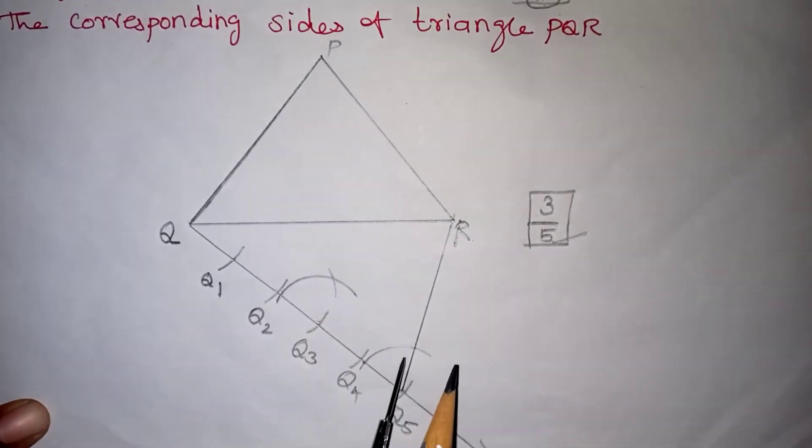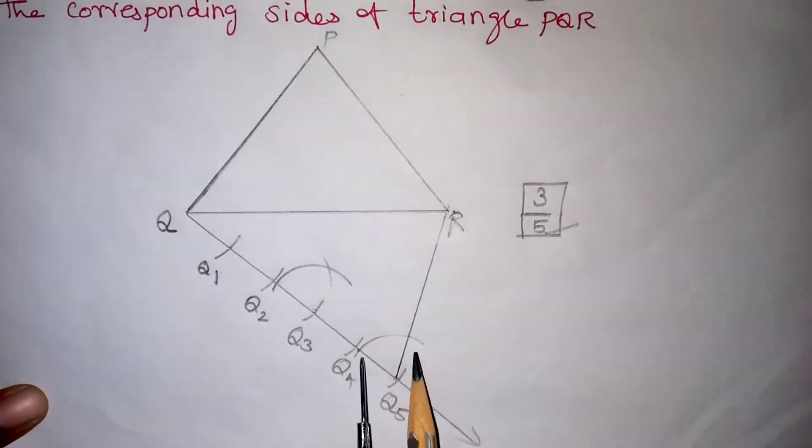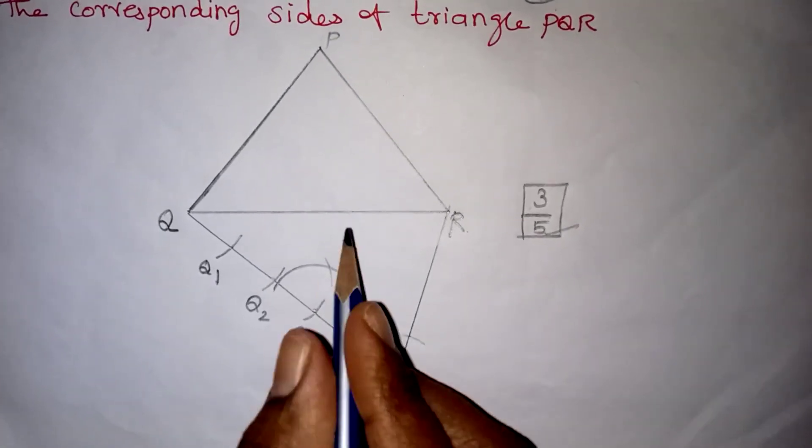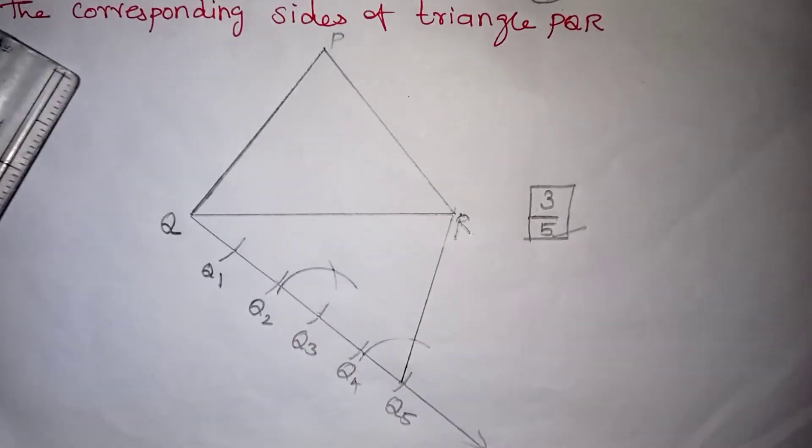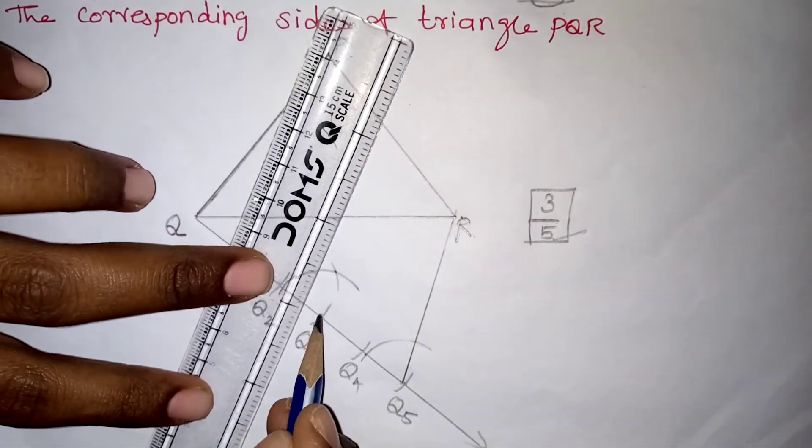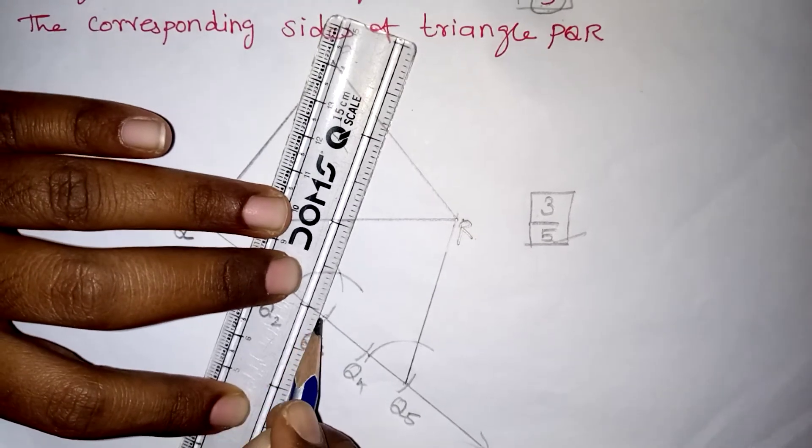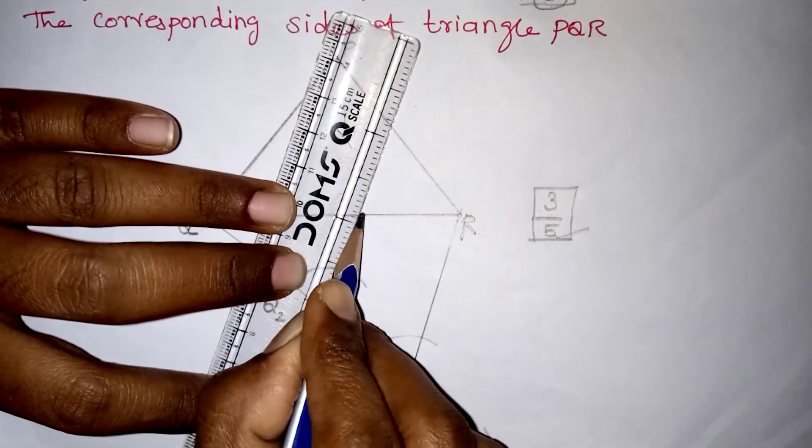Why we are cutting in this way? We are going to make these two angles equal. This angle and this angle are equal. After drawing this arc, you will be getting a point. That point and Q3 must be joined. Then the line should be extended to the base of the triangle.